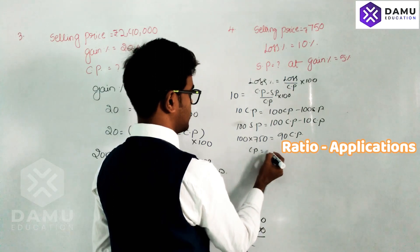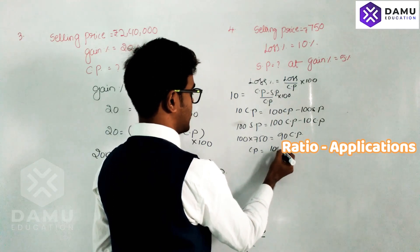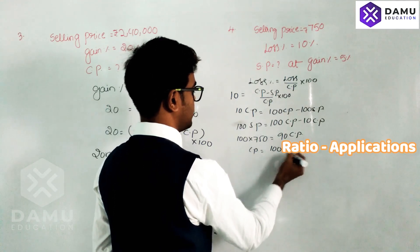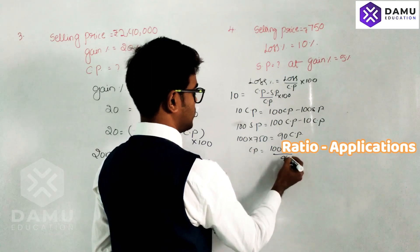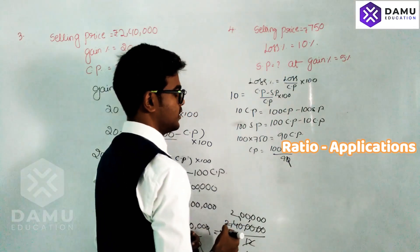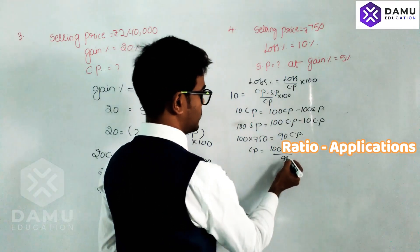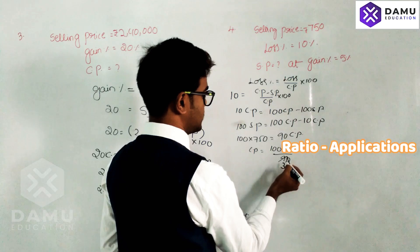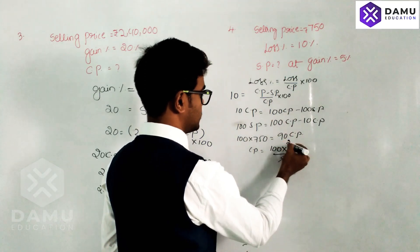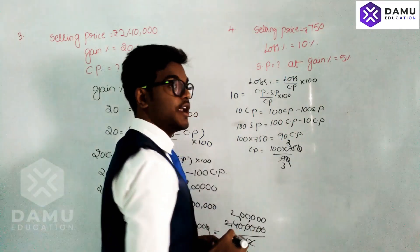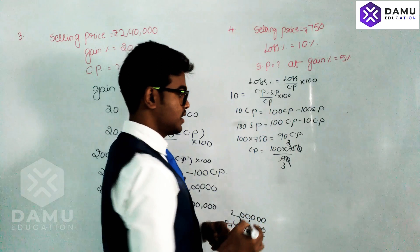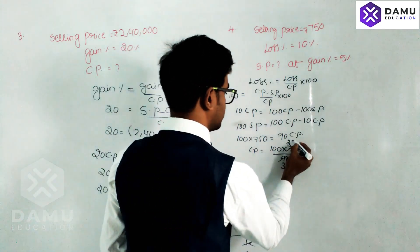Since SP is 750 rupees: 100 × 750 equals 90 CP. So CP equals 100 × 750 divided by 90. Cancelling zeros and dividing: we get the cost price.